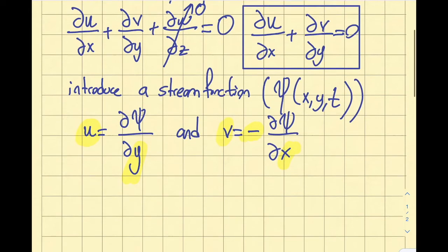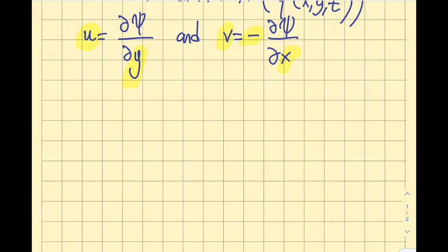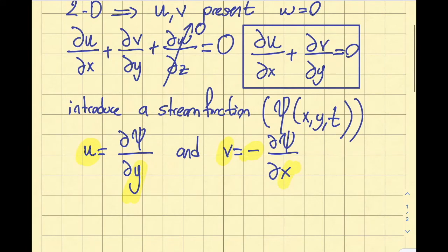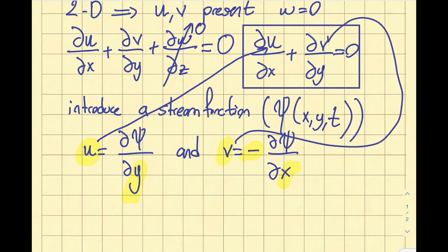Now, I mentioned when we started this module that this is going to make my life easier. So I want to demonstrate to you why this makes my life easier. I'm going to pick up u and insert it there, pick up v and insert it here. The summation of these two terms must equal zero from conservation of mass. So let's go ahead and do it.